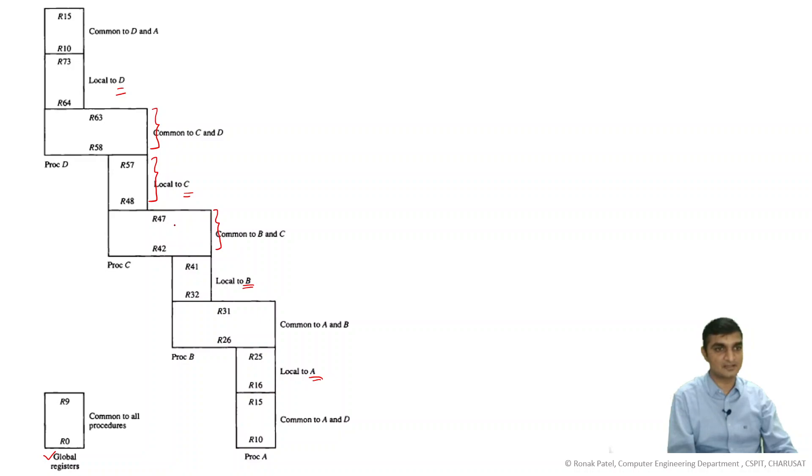And some registers are common between this - this is common between C and D, and this is common between B and C. You can see any adjacent call, we have some common registers. Here we have some common registers, here we have some common registers.